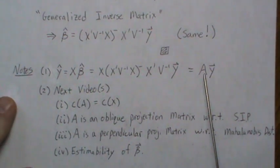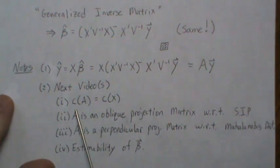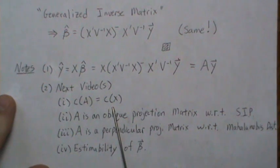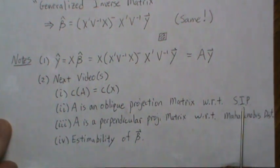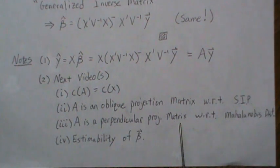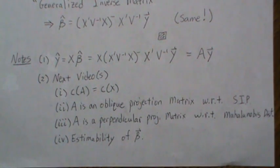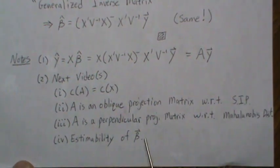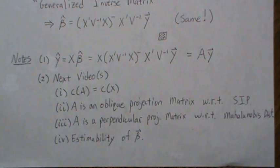In the next few videos I want to show that the hat matrix and matrix A have a lot in common: the column spaces of A and X are the same; A is an oblique projection matrix with respect to the standard inner product but is actually a perpendicular projection matrix with respect to the Mahalanobis distance developed in this video. I also want to look at properties of estimability of the β parameters. After those, I'll jump back to GLM models. Hope you enjoyed it — many thanks for the support over the past two years! Please like the video and subscribe so you don't miss the next one.